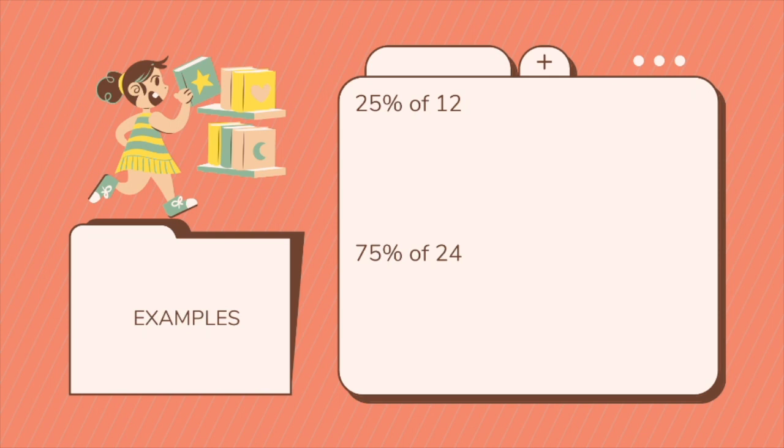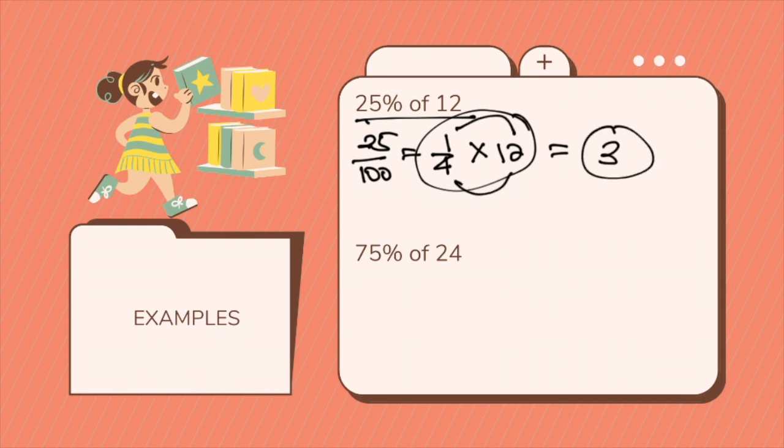All right. So let's take a look at 25% of 12. So that will be 25 over 100, which is 1 fourth. Multiply it by 12. That will be 1 times 12 divided by 4. That will be 3. So 25% of 12 is 3.